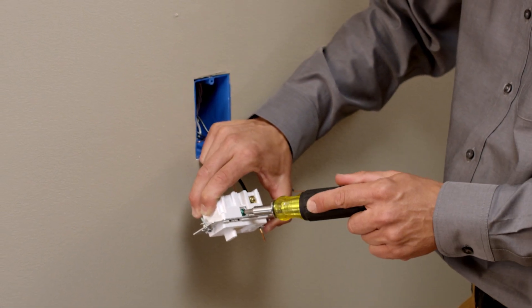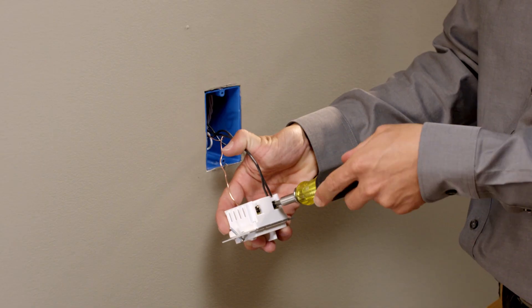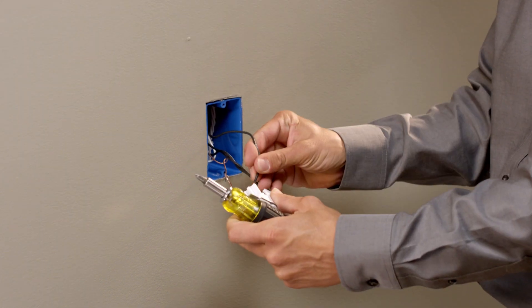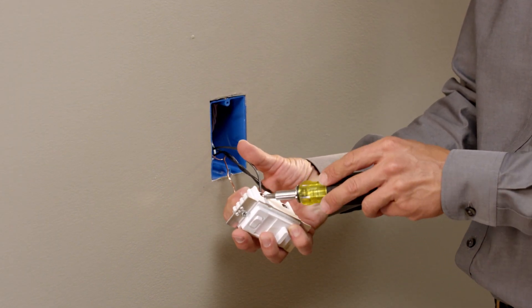Connect the house green wire to the ground wire on the dimmer. Next, connect the black house wire to the hot wire on the dimmer. Finally, connect the load wire on the dimmer to the remaining black house wire.